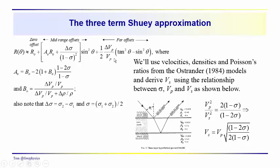Let's take a look at the three-term Shuey approximation. This form of the approximation is presented by Hilterman in his short course notes. He identifies the first term as the zero offset reflection coefficient. The second term controls amplitude variations primarily in the midrange, and the third term controls the amplitude variations at the far offsets.